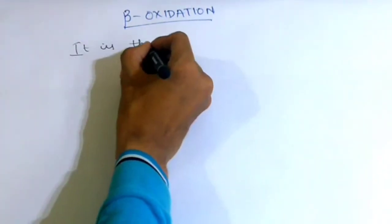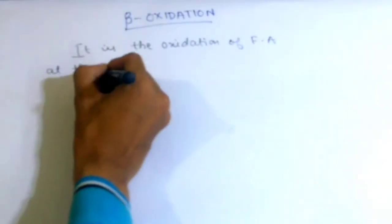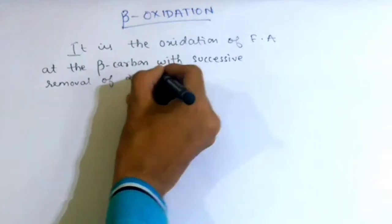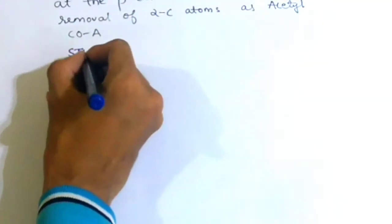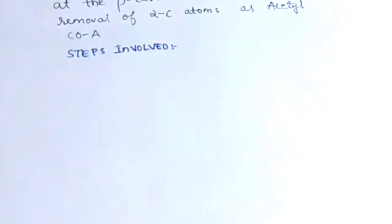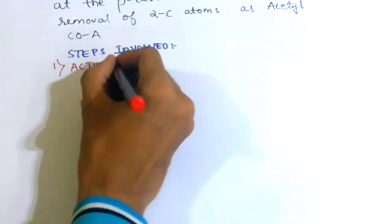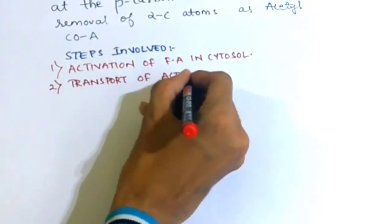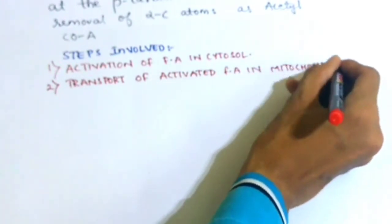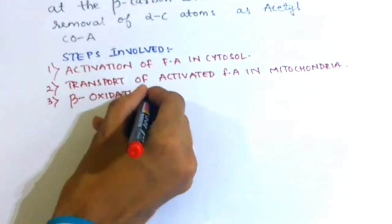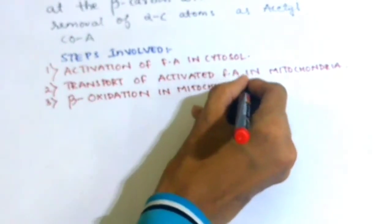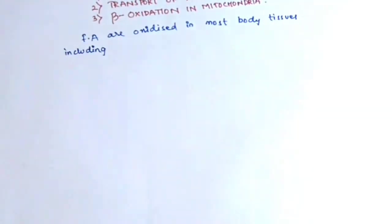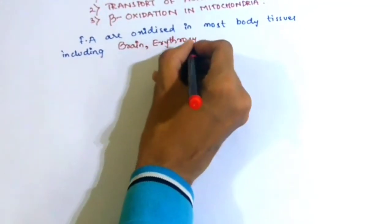Beta-oxidation is the oxidation of fatty acids at the beta-carbon with successive removal of two carbon atoms in the form of acetyl-coenzyme A. The steps involved are activation of fatty acids in the cytosol, transportation of activated fatty acid into the mitochondrion, and beta-oxidation in the mitochondrion. Fatty acids are oxidized in most body tissues including brain, erythrocytes, and adrenal medulla.